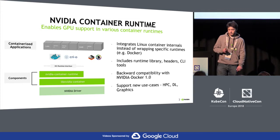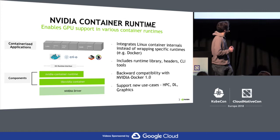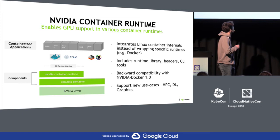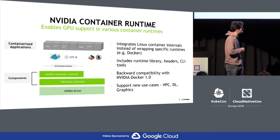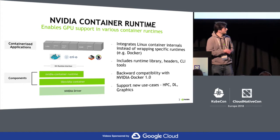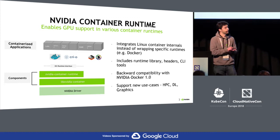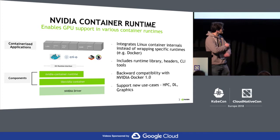We're better integrated for OCI runtimes because we get called at the pre-start level. For most container runtimes we don't need to ship a specific runtime, but for Docker we wrap runC and add a single line of code at the pre-start hook. This allowed us to support a lot of new use cases — for example, we're slowly adding support for graphics on Docker Hub. Now that we have these tools to support more runtimes, we're really looking at Kubernetes.